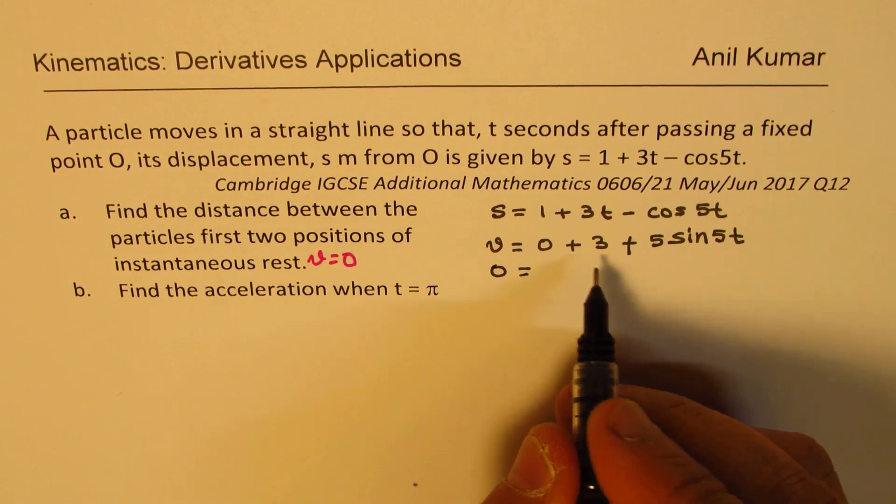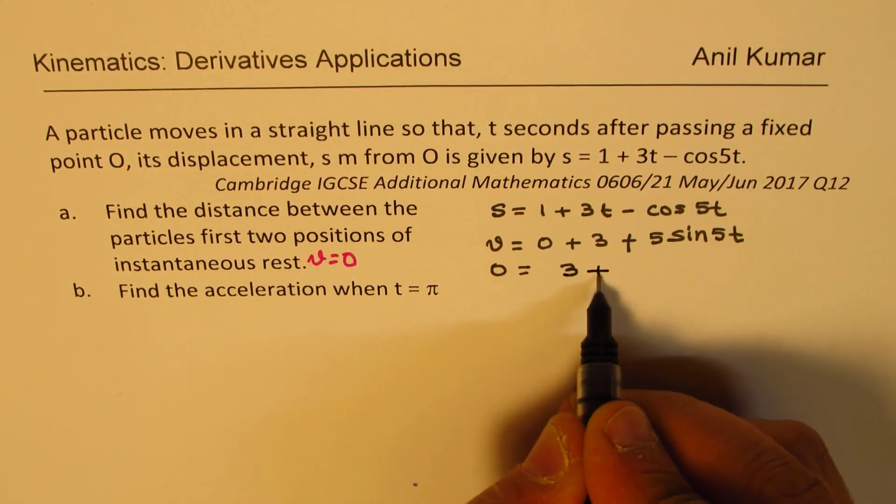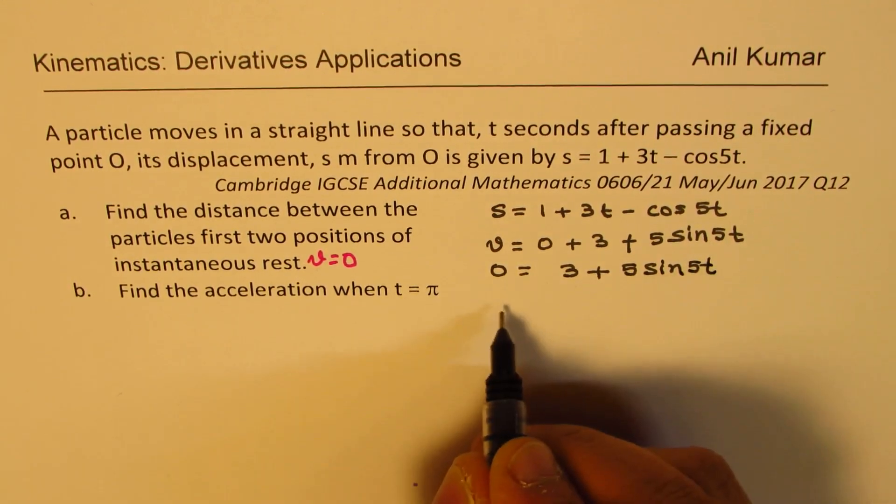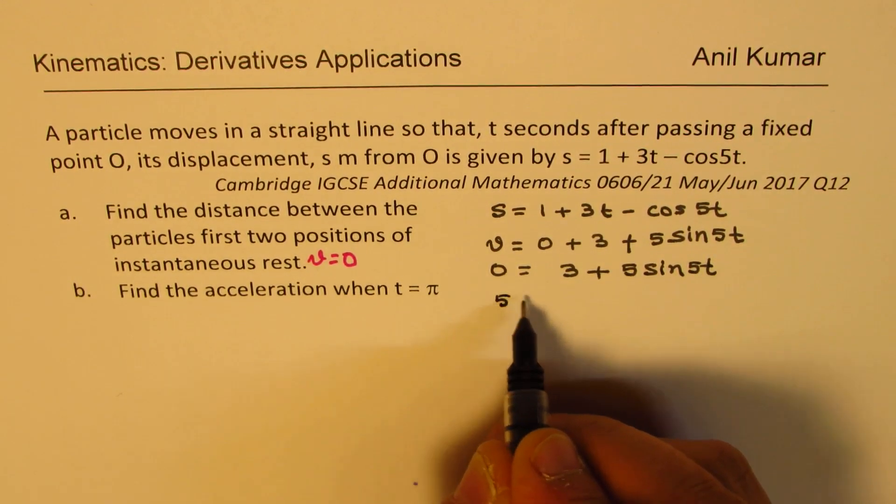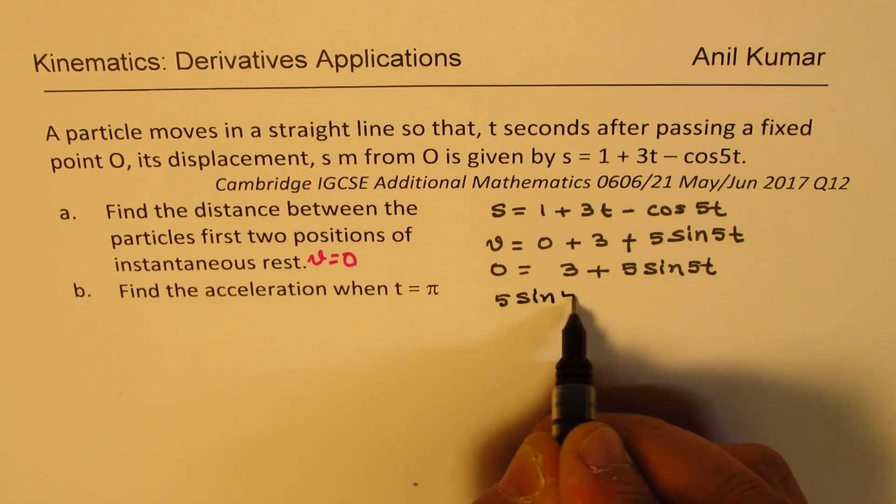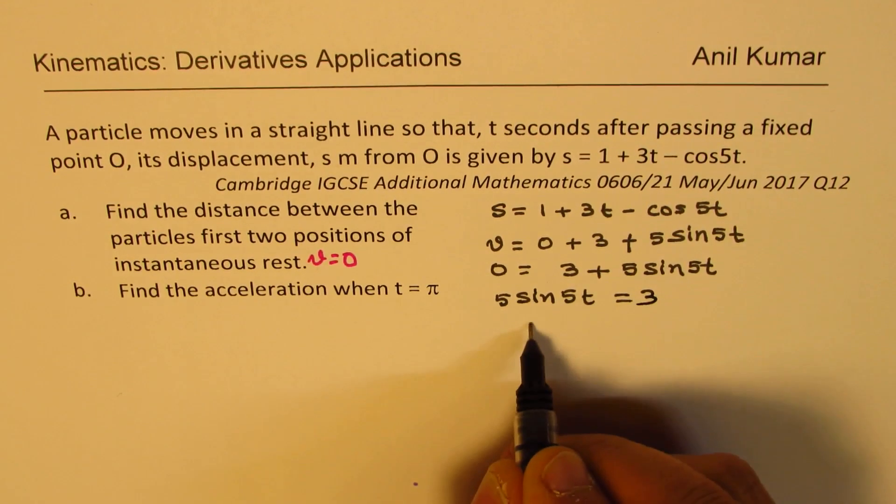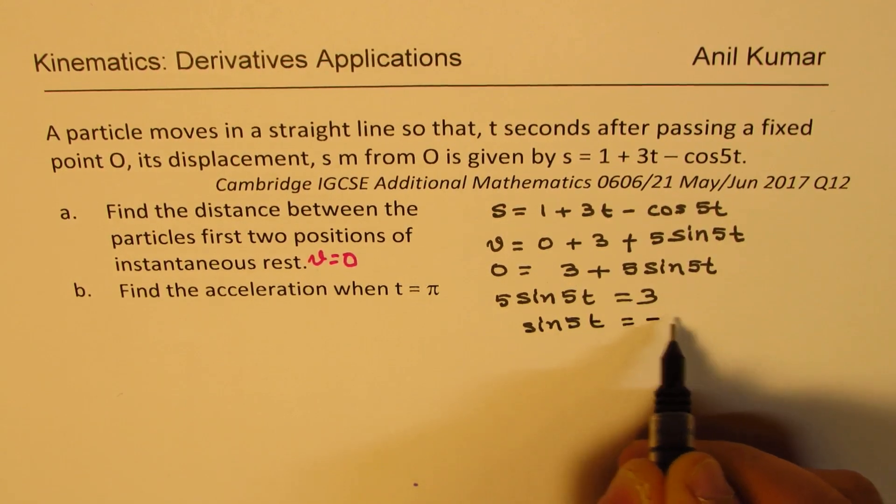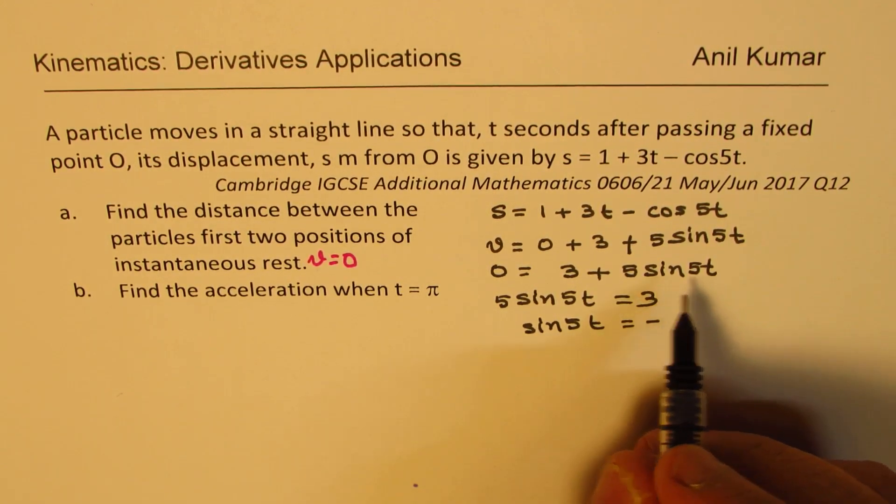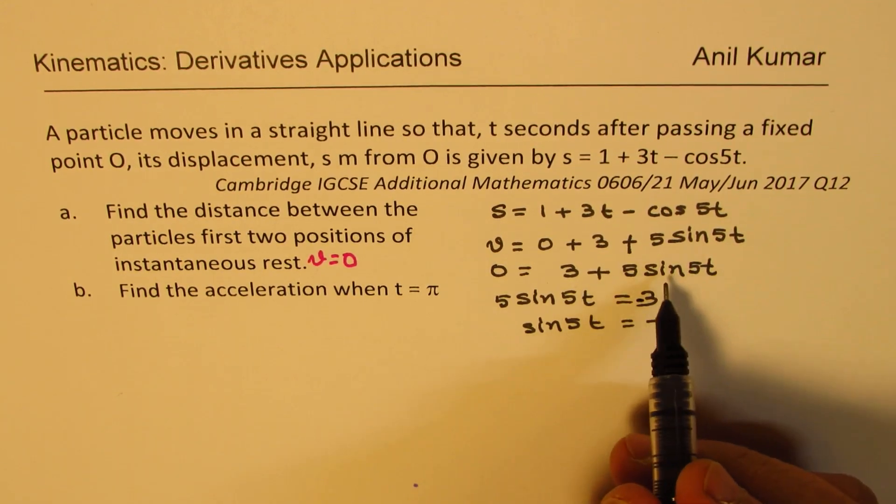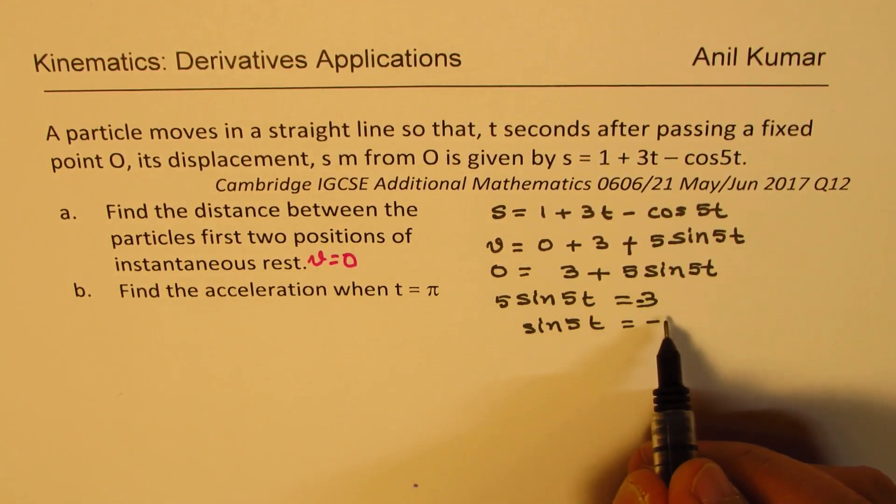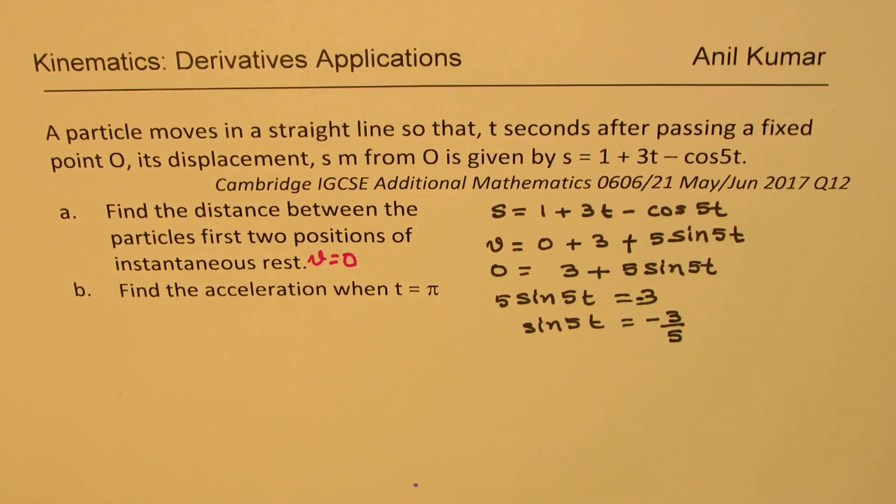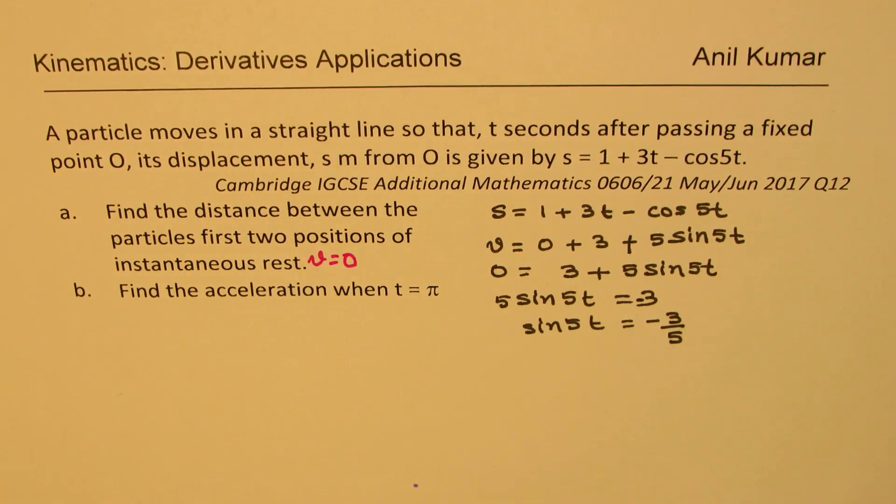We get the equation here as 3 plus 5 sine 5t equals 0, or we can write 5 sine 5t equals minus 3, or sine 5t equals minus 3 over 5. So we get sine 5t as minus 3 over 5.